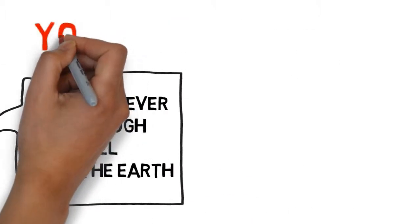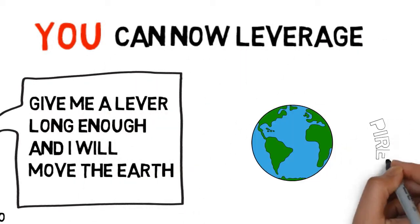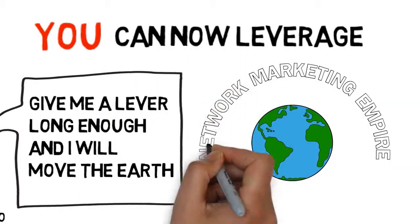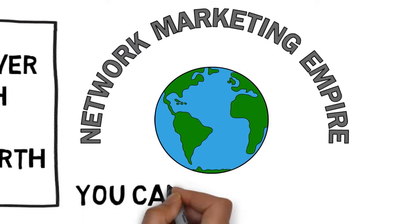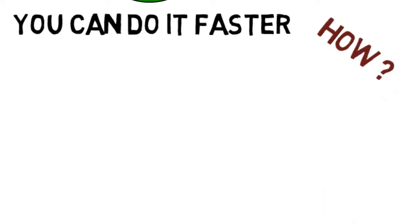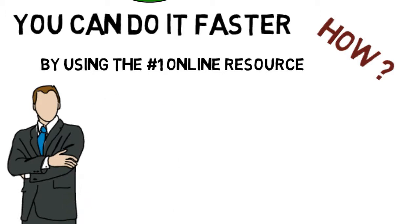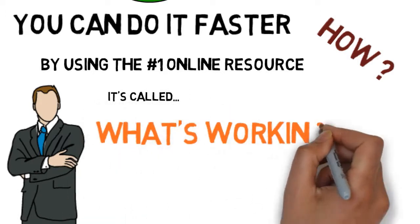Using this ancient philosophy, you can now leverage the entire online universe to very quickly build and grow your network marketing empire. And you can do it faster than at any other time in the entire history of marketing. How? By using the number one online resource created especially for the serious network marketer. It's called What's Working Now.